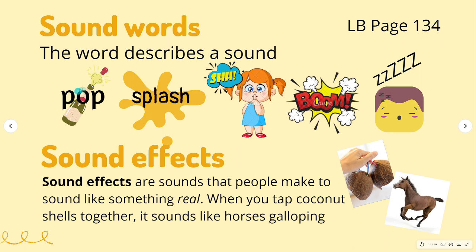Sound words — what do they mean? The word describes a sound. When you open a bottle, we describe the sound as 'pop.' 'Splosh' describes sound from water. 'Shhh' means quiet. 'Boom' is when something explodes. 'Zzzz' is the sound for sleepy or sleeping. Sound effects are sounds that people make to sound like something real — for example, when you tap coconut shells together, it sounds like horses galloping.